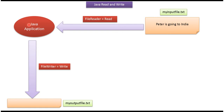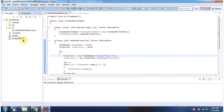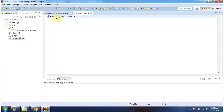Once the Java application reads the content from myInputFile.txt, it can use FileWriter to write the same content to myOutputFile.txt. Here you can see myInputFile.txt — its content is 'Peter is going to India.'